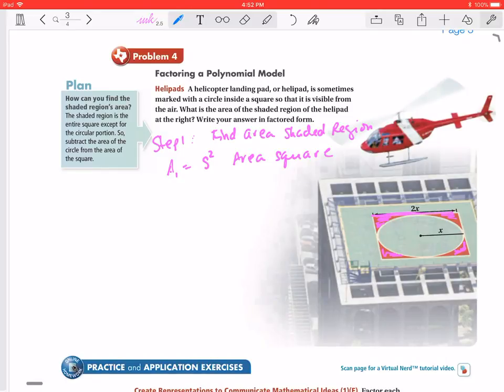Well, it tells us here that the side of this square is 2X. So I can now rewrite my equation substituting 2X for S, and then that's going to be squared. So we're substituting.